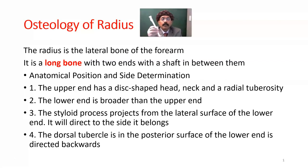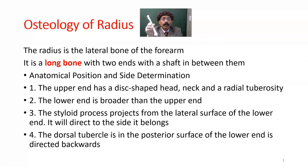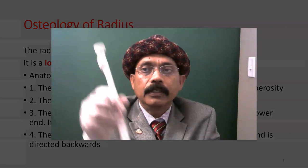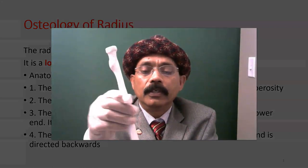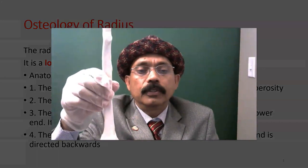The dorsal tubercle is present on the posterior aspect of the lower end of the radius. The dorsal tubercle on the posterior surface of the lower end is directed backward. This is the anatomical position.